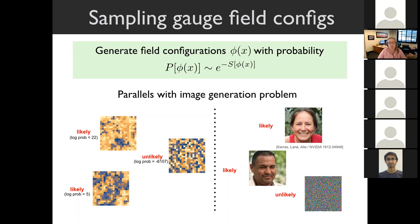This sampling problem has parallels with the image generation problem: we want to sample configurations that look like the correlated ones but not like random noise—much like generating images of faces where you want realistic faces and not noise. The key difference is that in field theory we do want the rare-looking configurations, just very infrequently, precisely as often as they should be sampled.